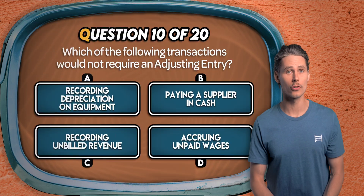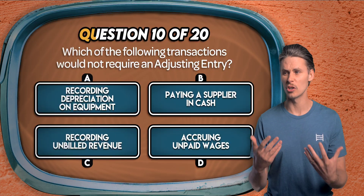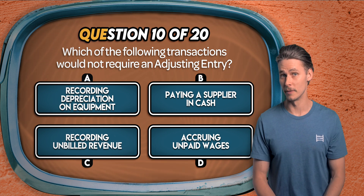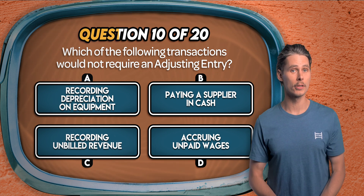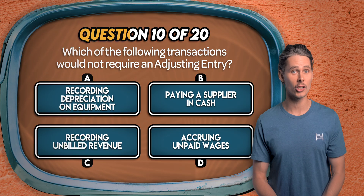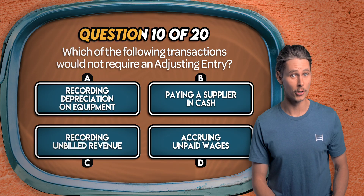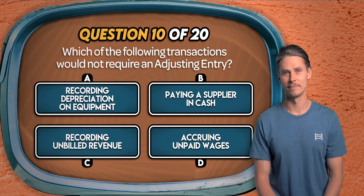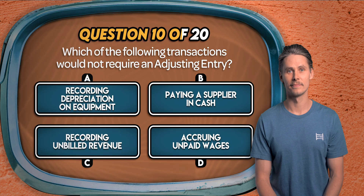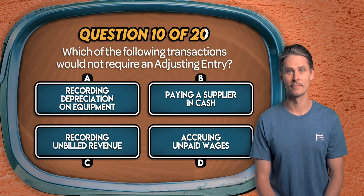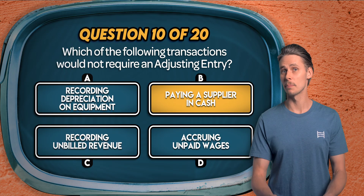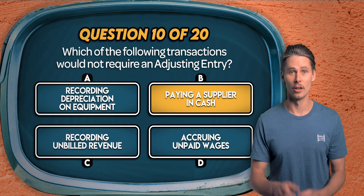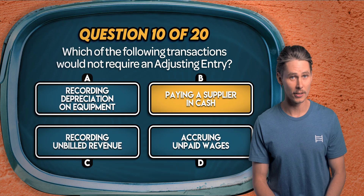Question 10. Which of the following transactions would not require an adjusting entry? Recording depreciation on equipment, paying a supplier in cash, recording unbilled revenue, or accruing unpaid wages? It's B. Paying a supplier is a regular cash transaction that's recorded at the time it occurs.